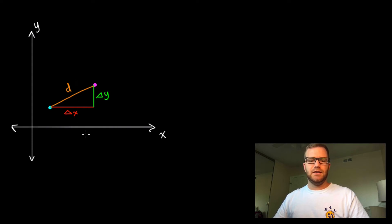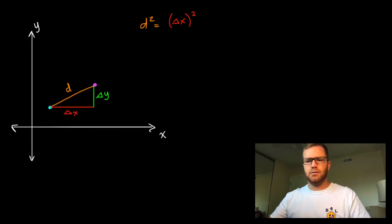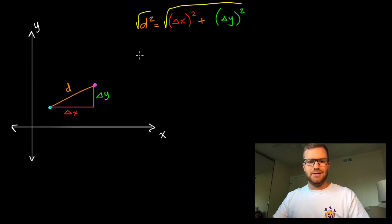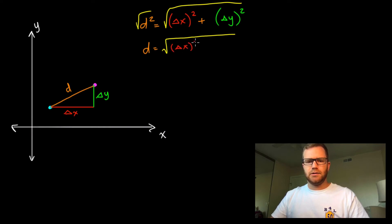If we were trying to find the length of D using the Pythagorean Theorem, it would look like this: D squared equals the change in X squared plus the change in Y squared. But that gives us the distance squared. So if we wanted the actual distance, we take the square root of both sides, giving us D equals the square root of Delta X squared plus Delta Y squared.